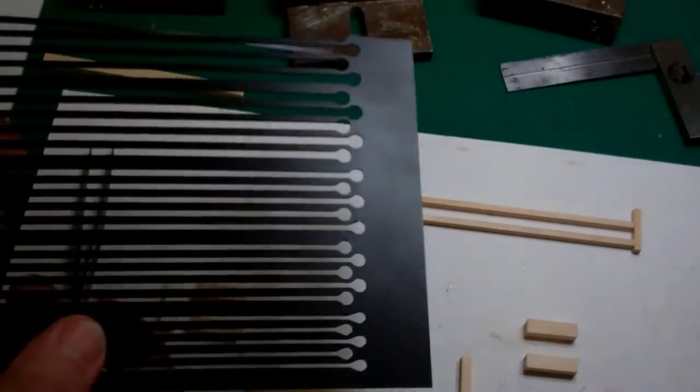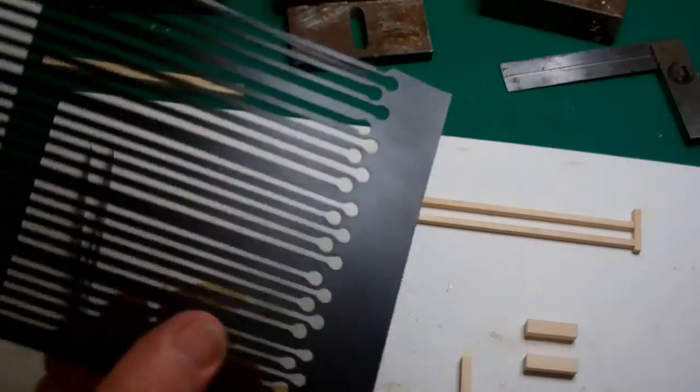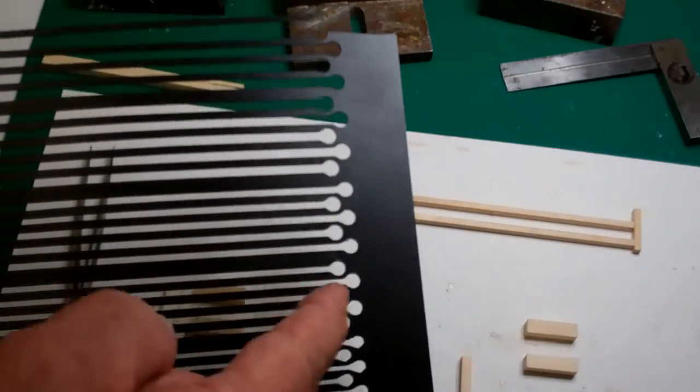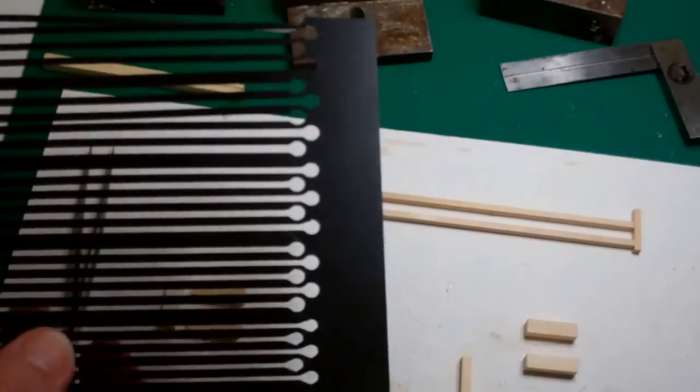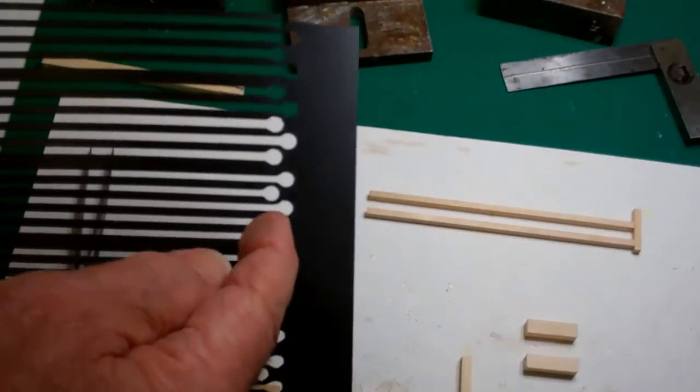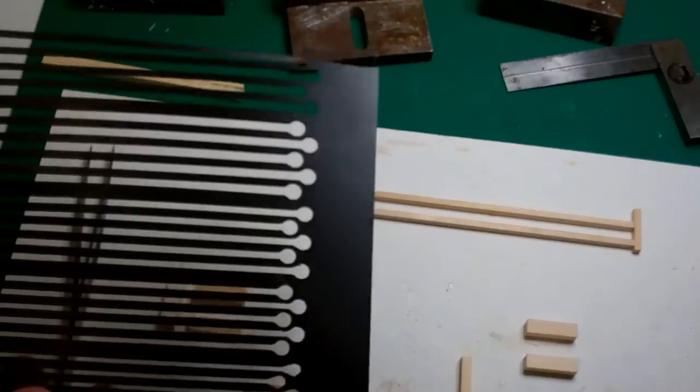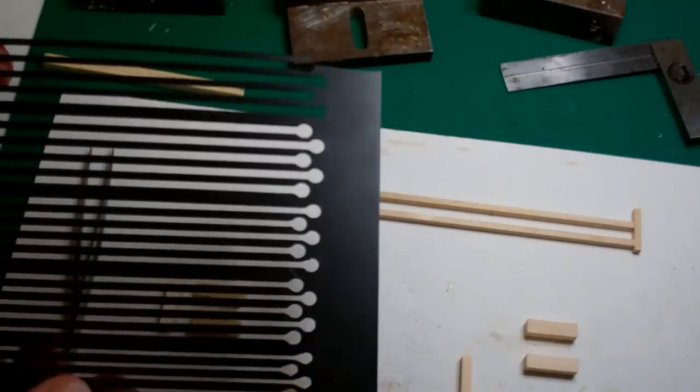Earlier I removed all these truss rods from the sheet of black styrene, and each one of them had a small hole for the eye bars.